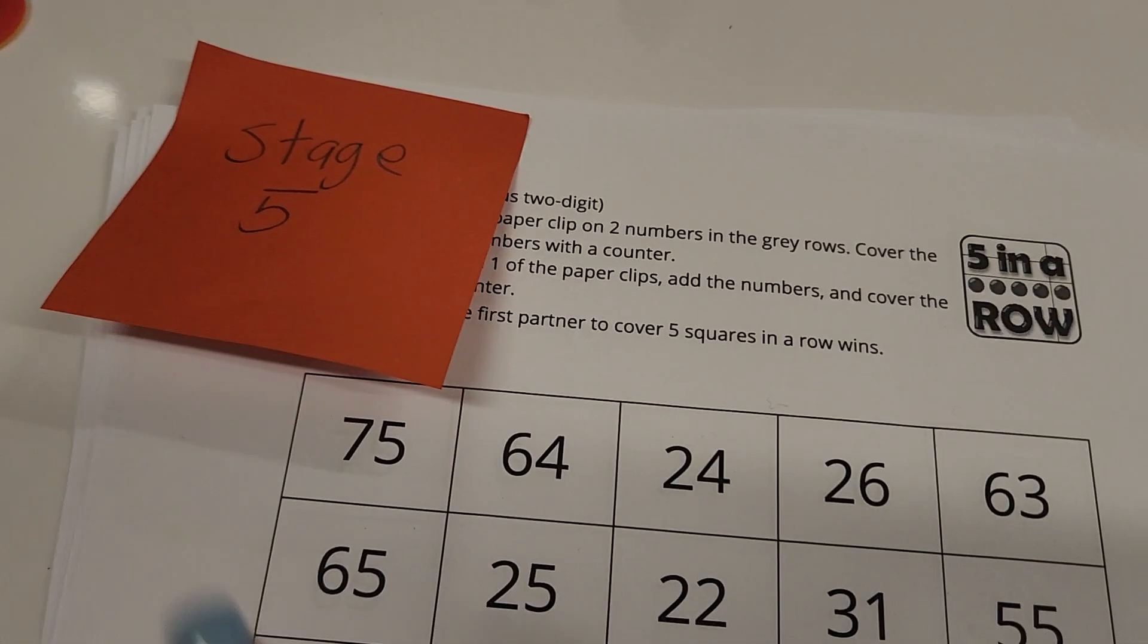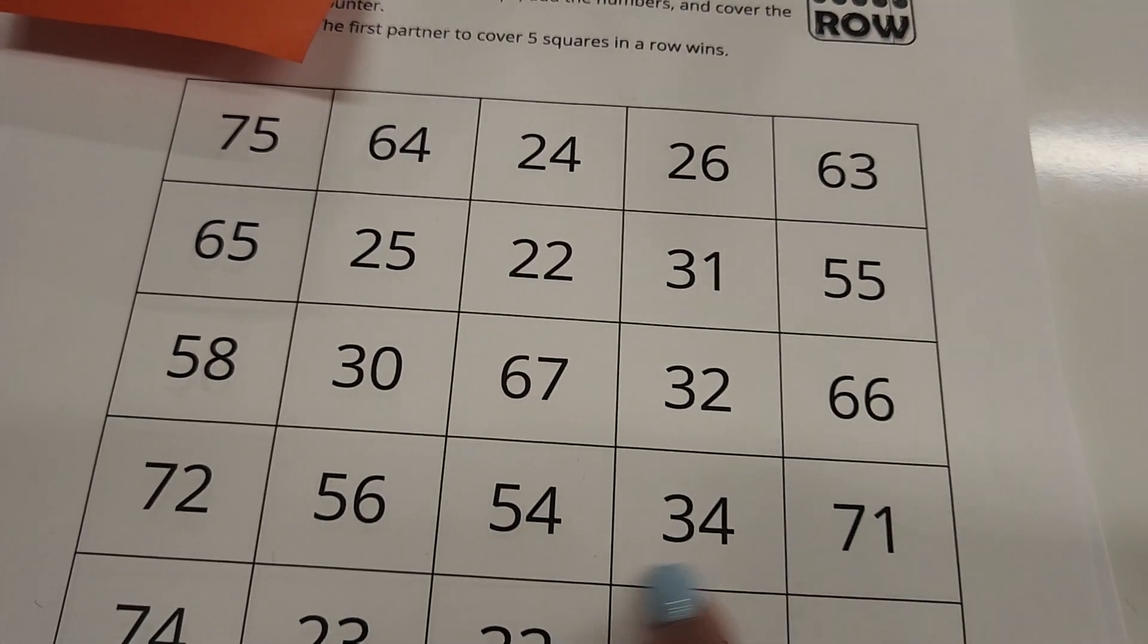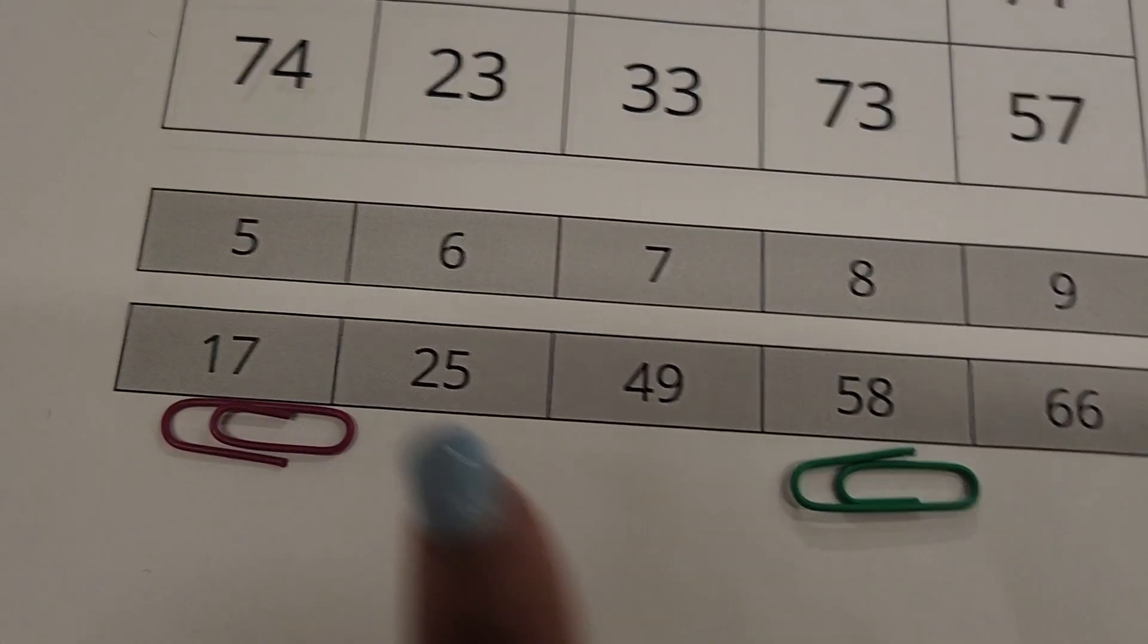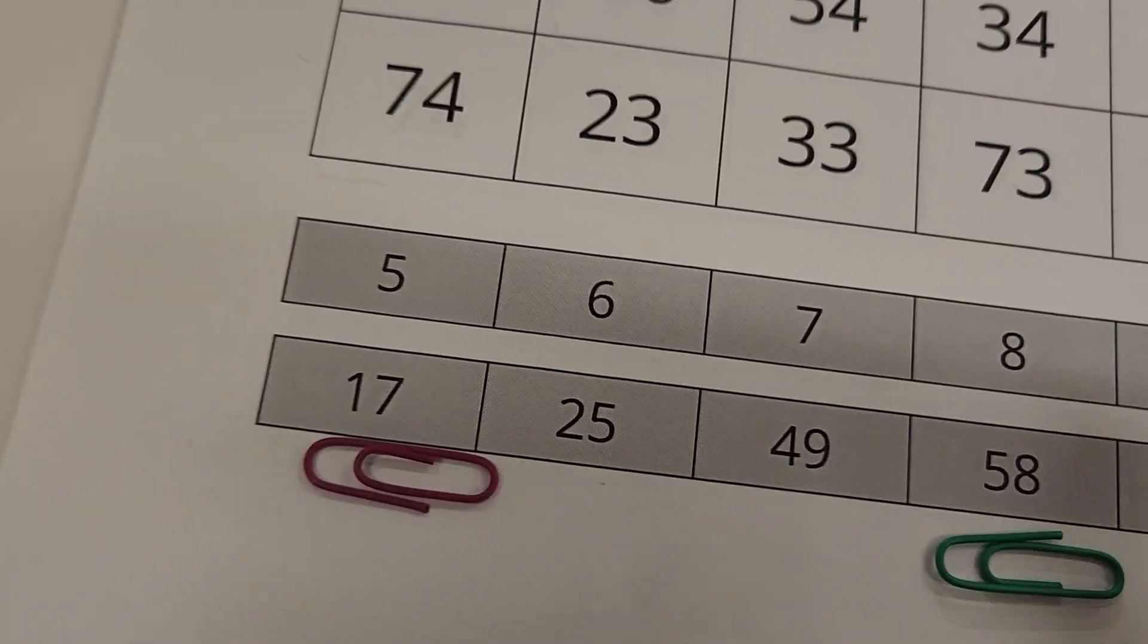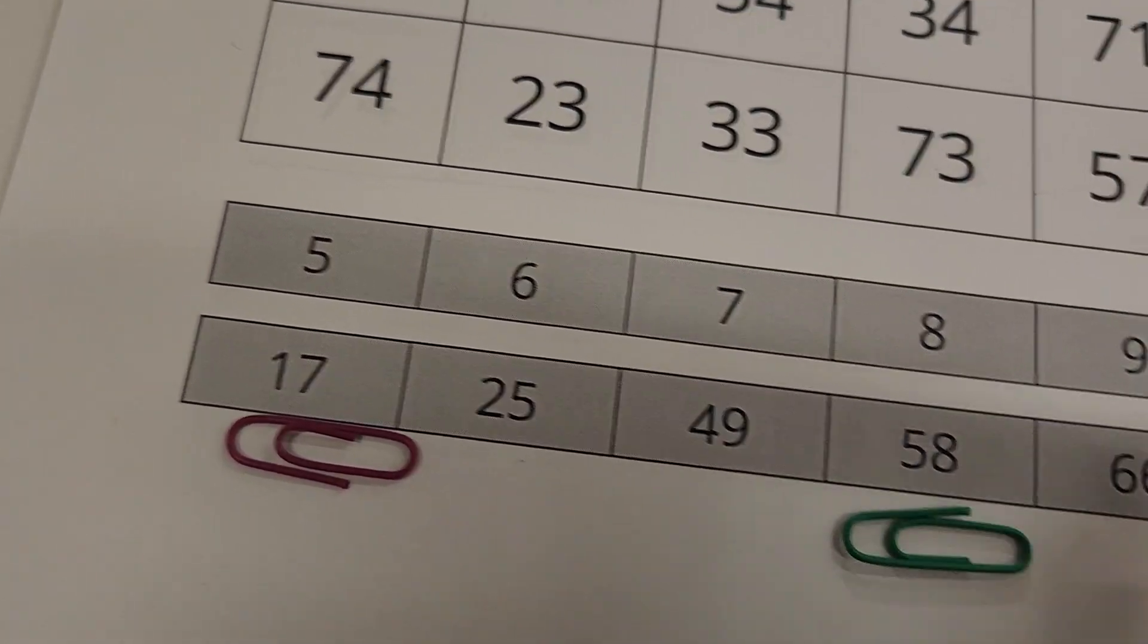The first stage is stage five. As you can see, we have double digits and the addends. The addends are the numbers that you add. The addends are in single digits and double digits.